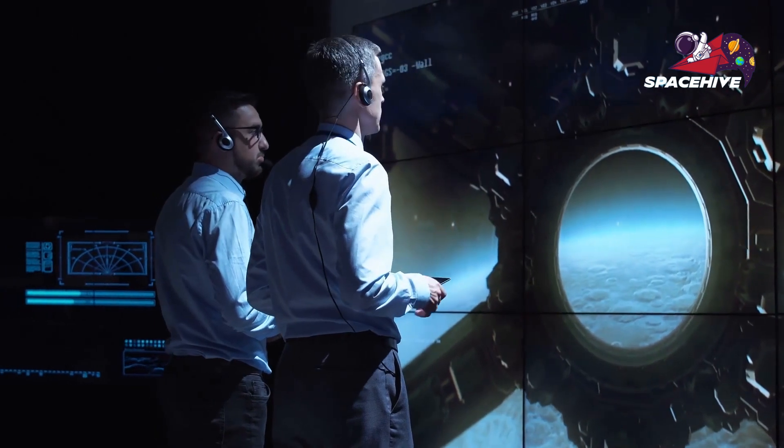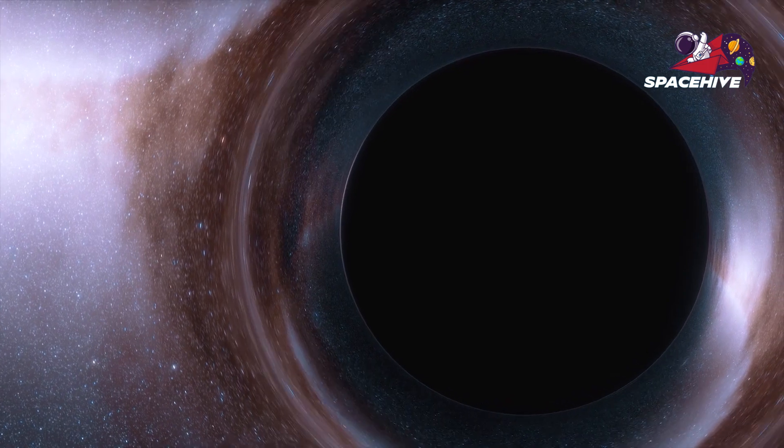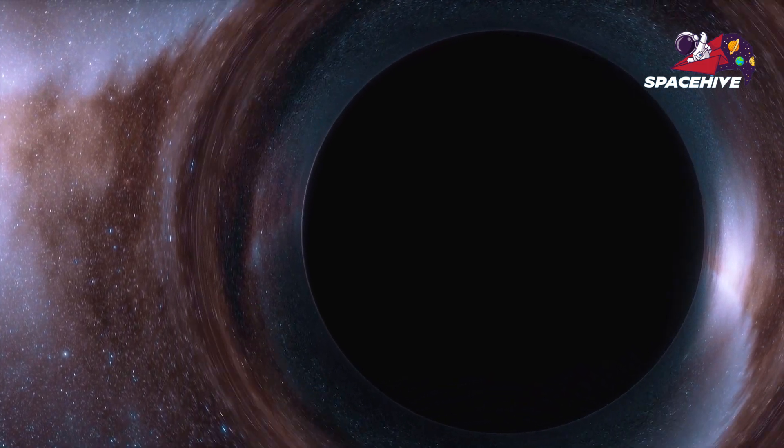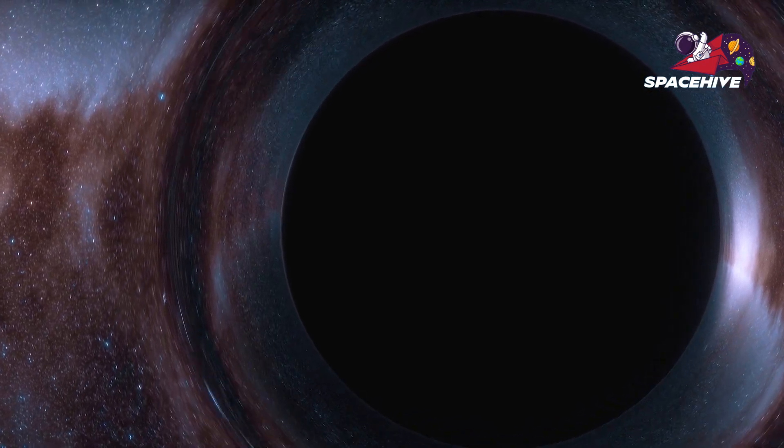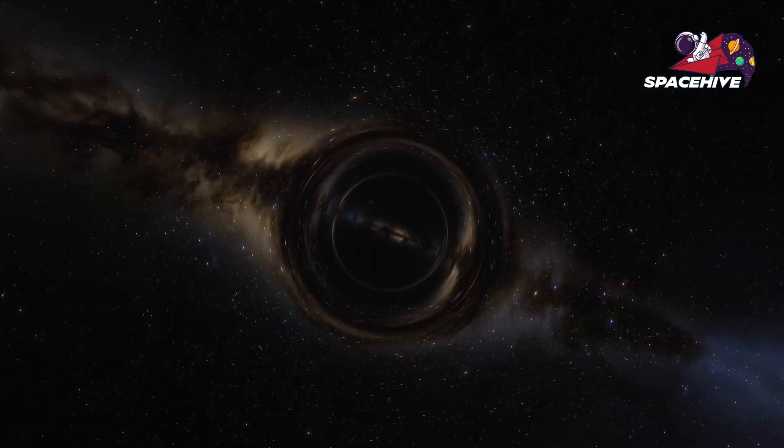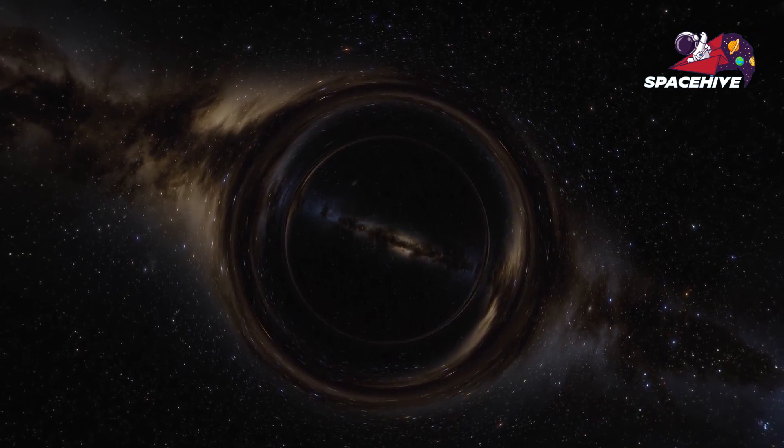Number 5. Did you know that black holes can spin? Most black holes in the universe are thought to spin around their axis, just like planets and stars do. This rotation can have a massive effect on how black holes interact with the surrounding matter. For example, it can create powerful jets of particles that shoot out from the black hole at nearly the speed of light.